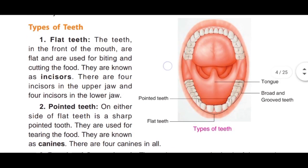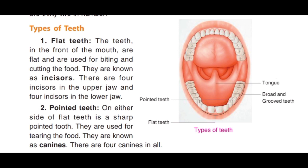Now let us learn about the types of teeth. The first type is flat teeth. The teeth in the front of the mouth are flat and are used for biting and cutting the food. They are known as incisors. Hamare saamneke chaar upar aur chaar neeche ke dant hote hain unko flat teeth kehte hain. Inhe incisors bhi kehte hain. There are four incisors in the upper jaw and four in the lower jaw, making a total of eight incisors.